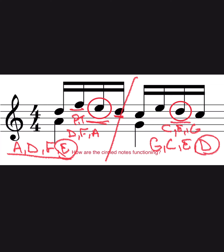This circled note is the D. It's another passing tone. We're on a chord tone E, we pass through PT, and then we land on another chord tone C at the end. So both of these circled notes are functioning as passing tones.